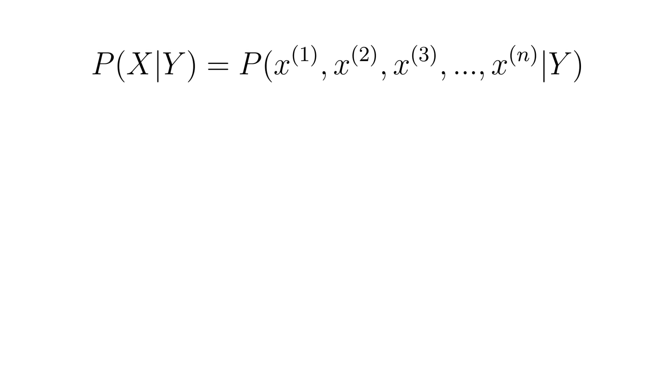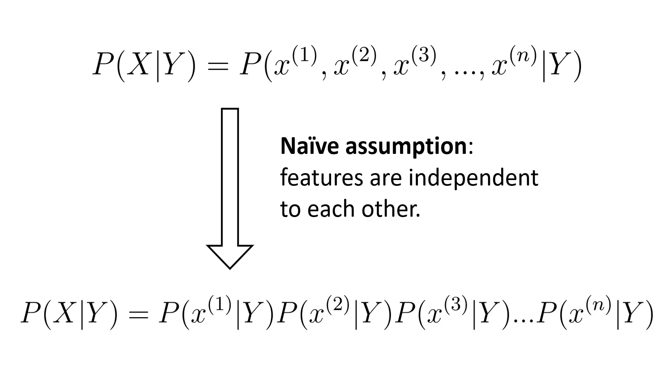However, formulating the problem in this way is not naive and what is naive in naive Bayes is the following assumption. Let's say that our data has some feature X1, X2 until Xn such that we can rewrite the equation P of X given Y as P of X1, X2 until Xn given Y. The naive assumption in naive Bayes says that all these features are independent to each other. So we can rewrite P of X given Y as a product of observing each feature independently given Y.